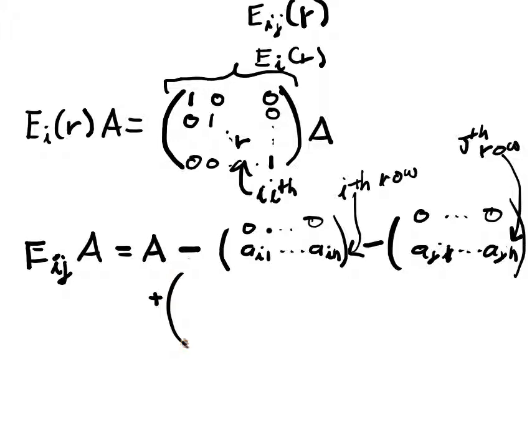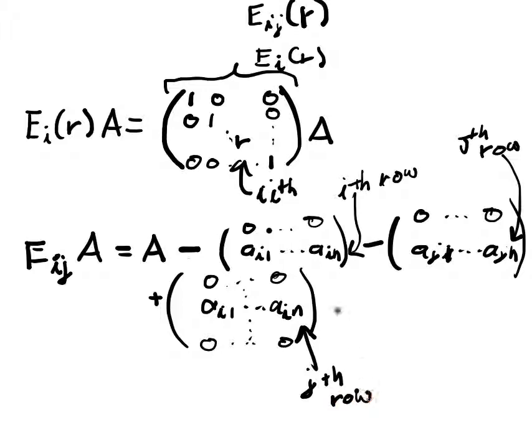And then I want to add a_i1 to a_in. Only I want this to be in the j-th row now. Plus, and now I add the j-th row of A to the i-th row here. So now I'm going to have a_j1 up to a_jn, zeros, otherwise, in the i-th row.